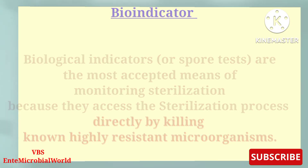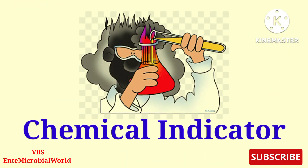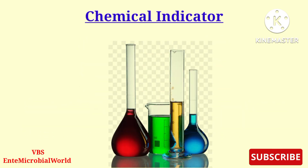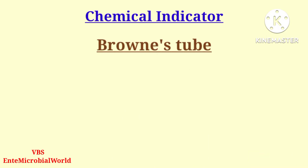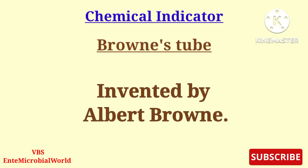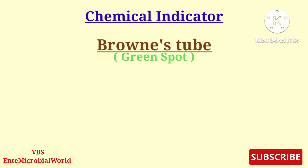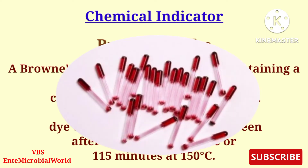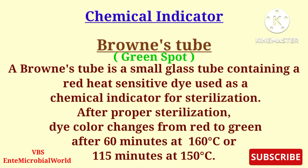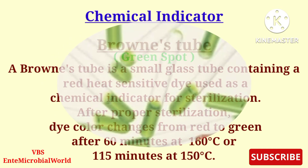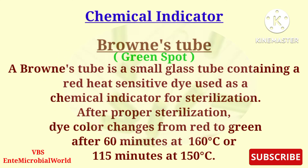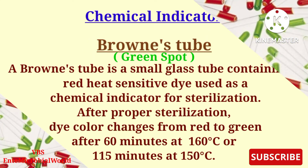Next, we are going to see about chemical indicators, where chemicals are used as an indicator. Brown's tube is a small glass tube containing a red heat-sensitive dye used as a chemical indicator for sterilization. After proper sterilization, a green color is produced — after 60 minutes at 160 degrees Celsius, or 115 minutes at 150 degrees Celsius.